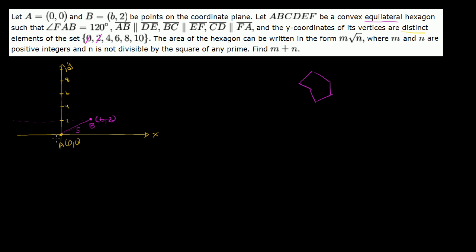Now F is the other vertex connected to A. F cannot sit on y = 2 and can't sit on y = 6 because then the distance would be much further than side s. So the next vertex is just going to have to sit on the y = 2 horizontal. It's going to be s away — something like that. So that is vertex F, because we're going A, B, C, D, E, F, and then back to A.